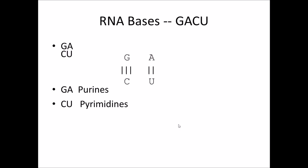To remember the RNA bases, I keep the same order and change the T to a U, giving GACU — also goofy and easy to remember. The same base pairing applies: U base pairs to A. The purines are in front and the pyrimidines are afterwards.